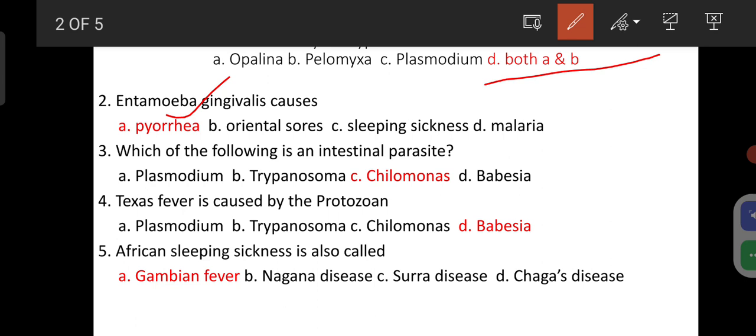Which of the following is an intestinal parasite? Chylomonas. Texas fever is caused by the protozoan Babesia.